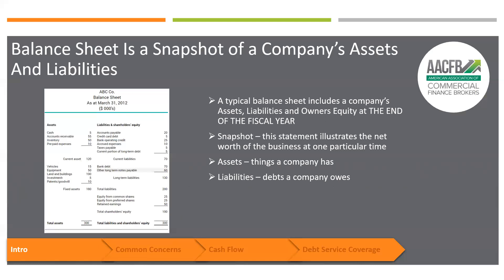The current portion of long-term debt is all of their monthly long-term payments times 12, so within the year. Equity is what the owners have put into the business — that's called net worth.